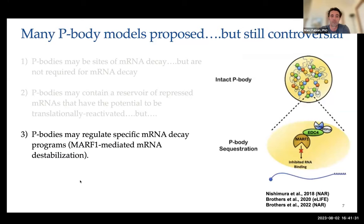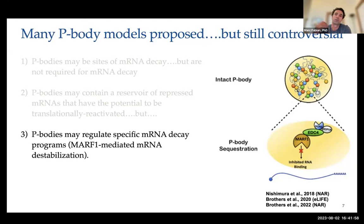We got into the P-body field when studying our MARF1 RNA endonuclease. We found that yes, it interfaces with decapping proteins like EDC4, but these interactions actually prevented MARF1 from binding to targeted RNAs and degrading them. Specifically, MARF1 needed to be sequestered to the P-body through these decapping factors — if it was sequestered there, it was prevented from binding its targets. If you disrupted P-body formation, MARF1 was then able to bind its targets and degrade them, suggesting P-bodies might have a role in regulating mRNA decay not by enhancing but by inhibiting it.